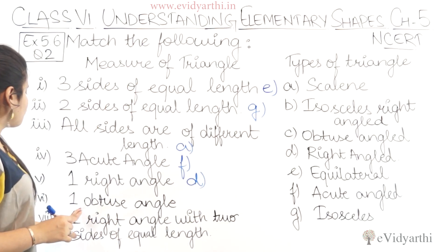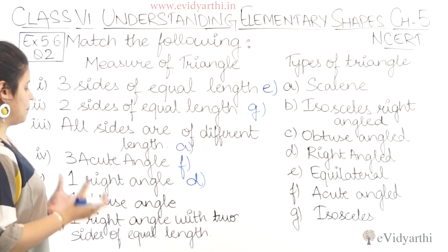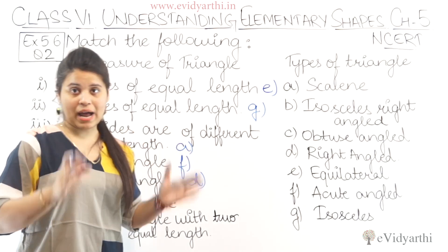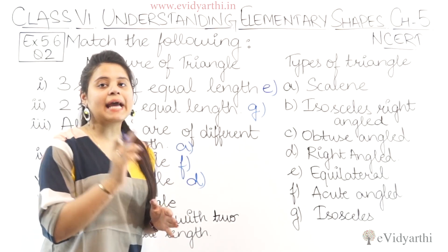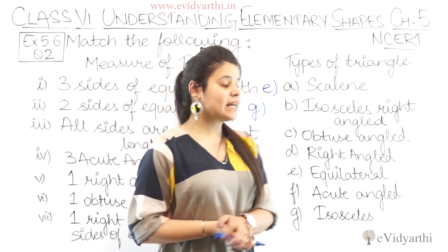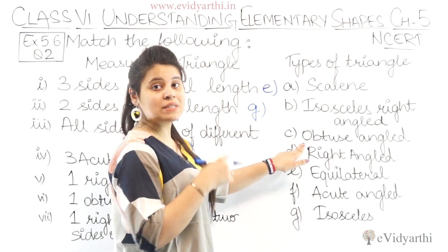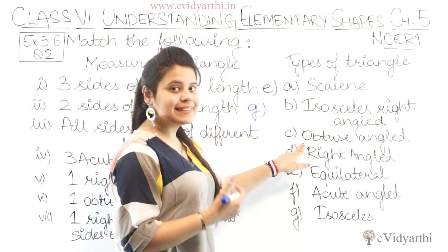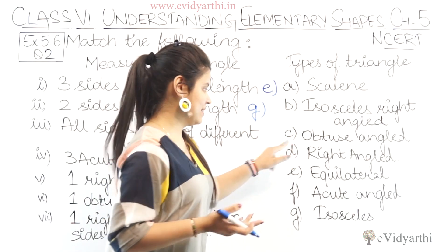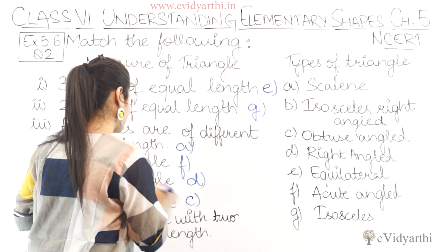Next is one obtuse angle. If one angle of a triangle is obtuse, then which triangle is it? It will be an obtuse angle triangle, which is the C part.